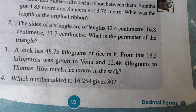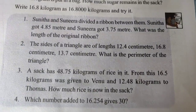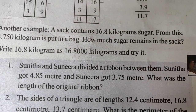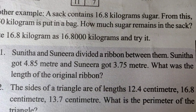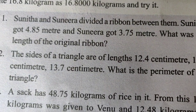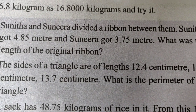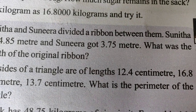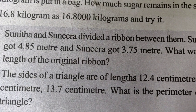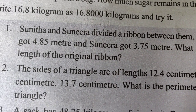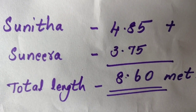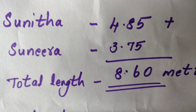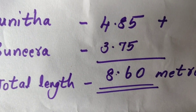Decimal Forms, page number 93, Question number 1. Sunitha and Sunira divided a ribbon between them. Sunitha got 4.85 meters and Sunira got 3.75 meters. What was the length of the original ribbon? To find the total length, we add the two decimal numbers.